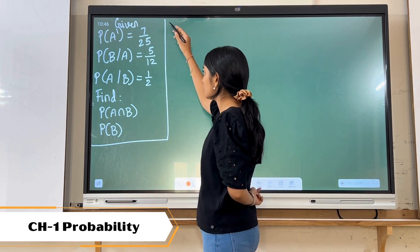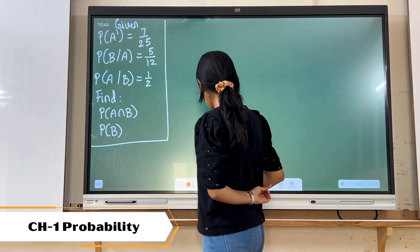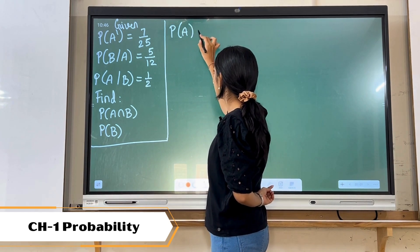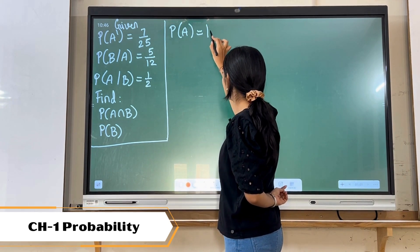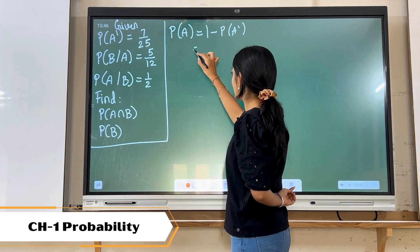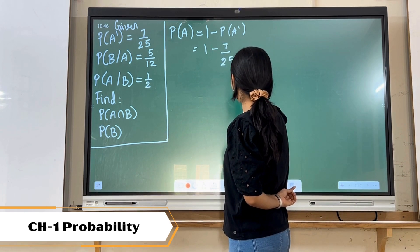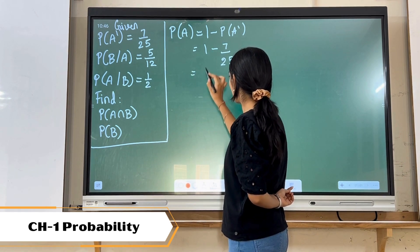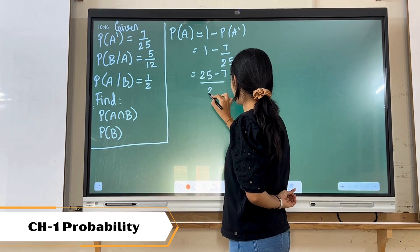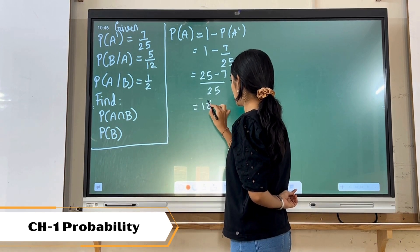Now as we are having the value of A dash, we can find the value of P of A. The formula is P of A is equal to 1 minus P of A dash. P of A dash is 7 upon 25, so the value of P of A is 25 minus 7 upon 25, that is 18 upon 25.